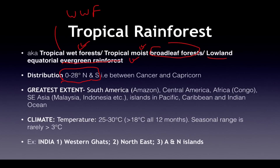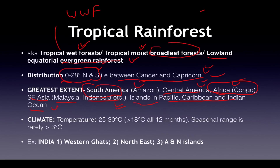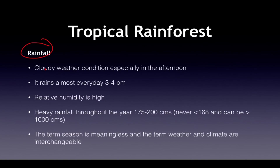They lie between 0 to 20 degrees north and south — that is between the Tropic of Cancer and Capricorn. Locations include South America (Amazon), Central America (Belize, Honduras, El Salvador), Africa (Congo), Southeast Asia (Malaysia, Indonesia), and Pacific, Caribbean, and Indian Ocean islands. In India, examples include the Western Ghats, Northeast, and Andaman & Nicobar Islands. Temperature varies from 20–30°C but must be above 18°C in all 12 months; seasonal range is barely more than 3°C.